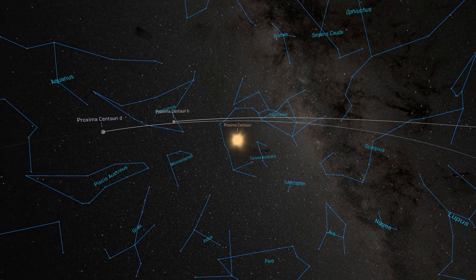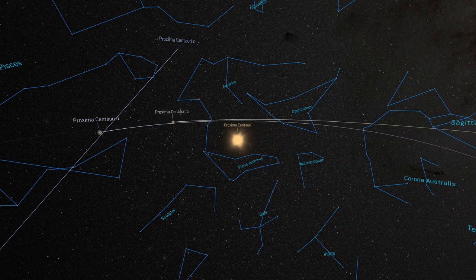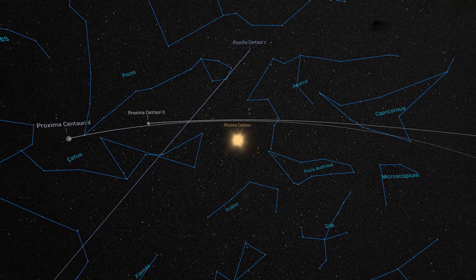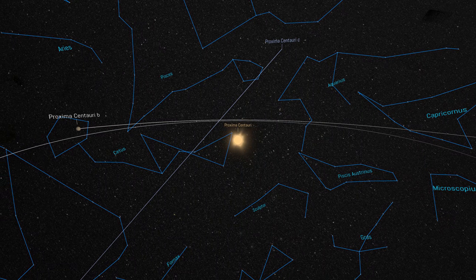Compare this to the actual speed of Voyager 1, which is about 75,000 kilometers per hour. It would still take Voyager 1 no less than 60,000 years to reach Proxima Centauri.